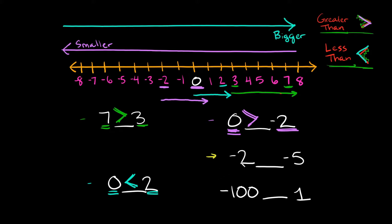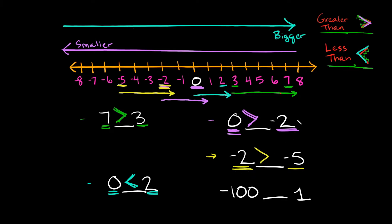Now let's try this next problem. The numbers we're going to compare are negative 2 and negative 5. Let's locate those on the number line: negative 2 is right here and negative 5 is right here. Which number is bigger? It would be negative 2 because it is further to the right on the number line. So for my inequality, if I want to eat the bigger number, I would eat negative 2. You would read your answer as: negative 2 is greater than negative 5.